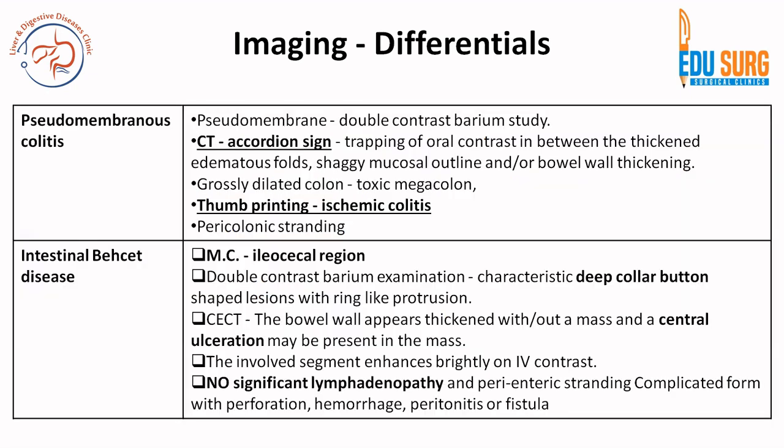Coming to pseudomembranous colitis — the pseudomembrane can be seen on double contrast barium study. You can have pericolonic stranding and toxic megacolon. A very common sign in pseudomembranous colitis is the accordion sign — oral contrast becomes trapped between the thickened edematous folds of the colonic mucosa, making the mucosal outline shaggy and leading to bowel wall thickening, creating an accordion-like appearance. Pseudomembranous colitis can result in toxic megacolon, which in turn can lead to ischemic colitis — thumb printing — and perforation.